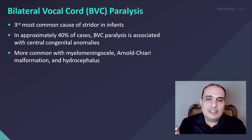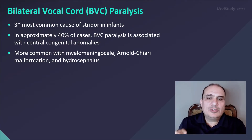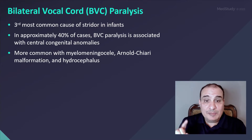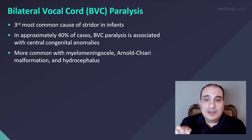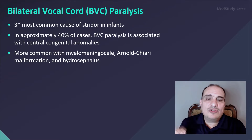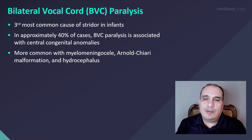Bilateral vocal cord paralysis is the third most common cause of stridor in infants. In approximately 40% of cases, bilateral vocal cord paralysis is associated with essential congenital anomalies.